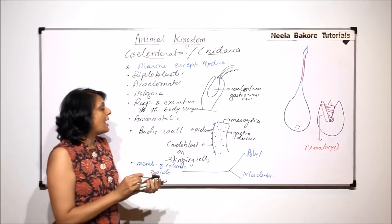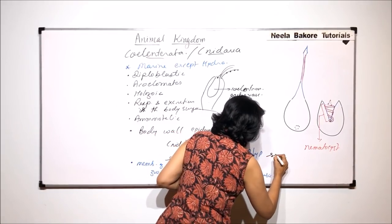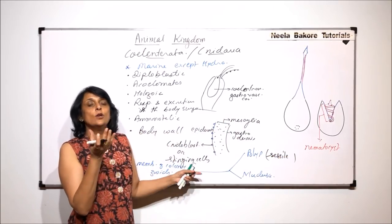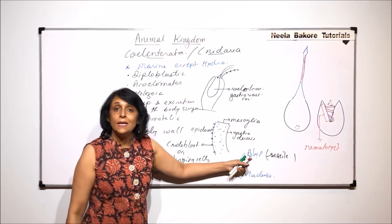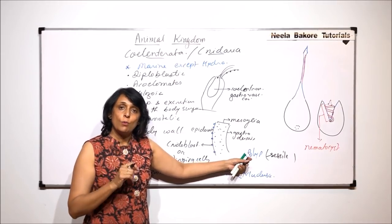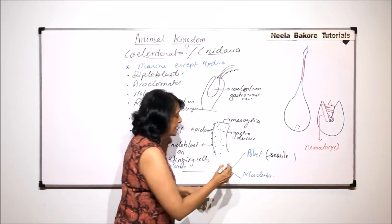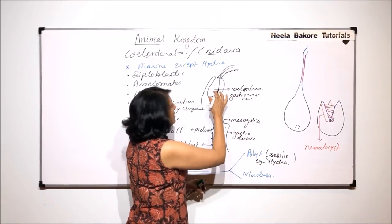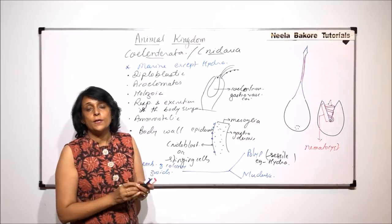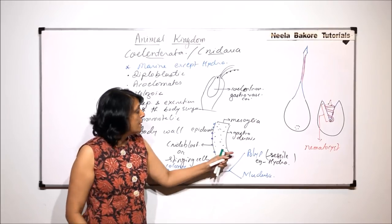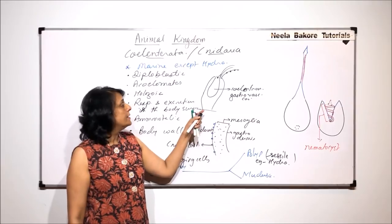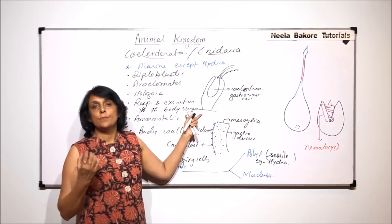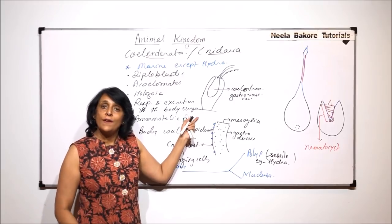The polyps are sessile. That means they normally remain attached, sedentary to one place. They are normally immobile but if required, they can move. Example of this can be taken as Hydra. When we draw Hydra, it is always drawn as if it is attached to the substratum. But if required, this Hydra can move from its place. And locomotion is a feature, characteristic feature of animals. So this also shows locomotion but if required.